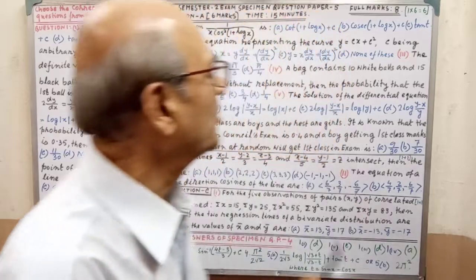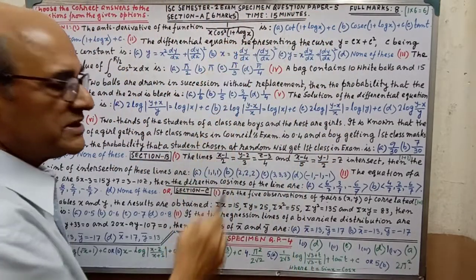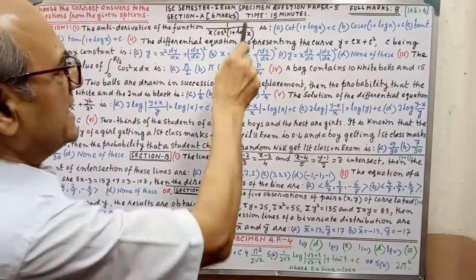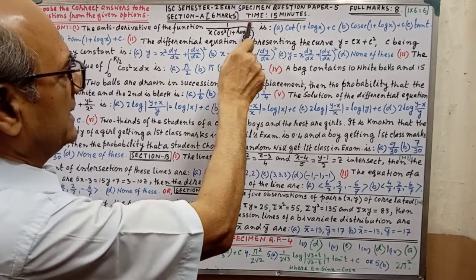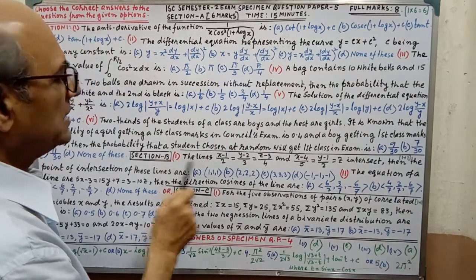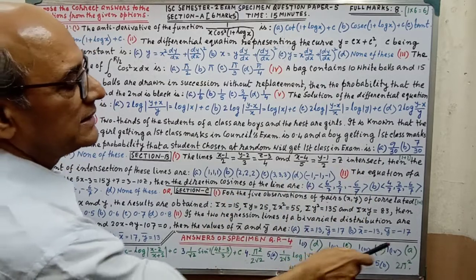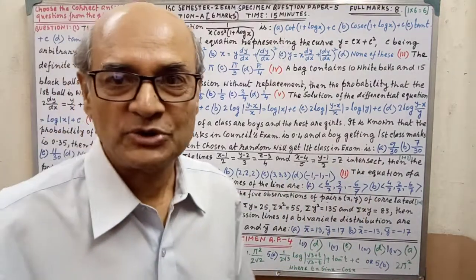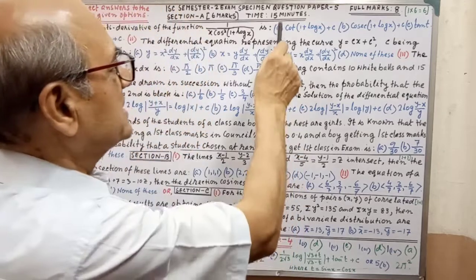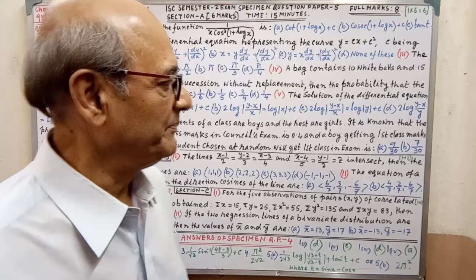Please pay your attention on both. Here the question is given only MCQ. Section A has 6 MCQ, Section B has 2, and Section C also has 2. Total 8 MCQ, and time is given 15 minutes. You have to strictly follow this time.